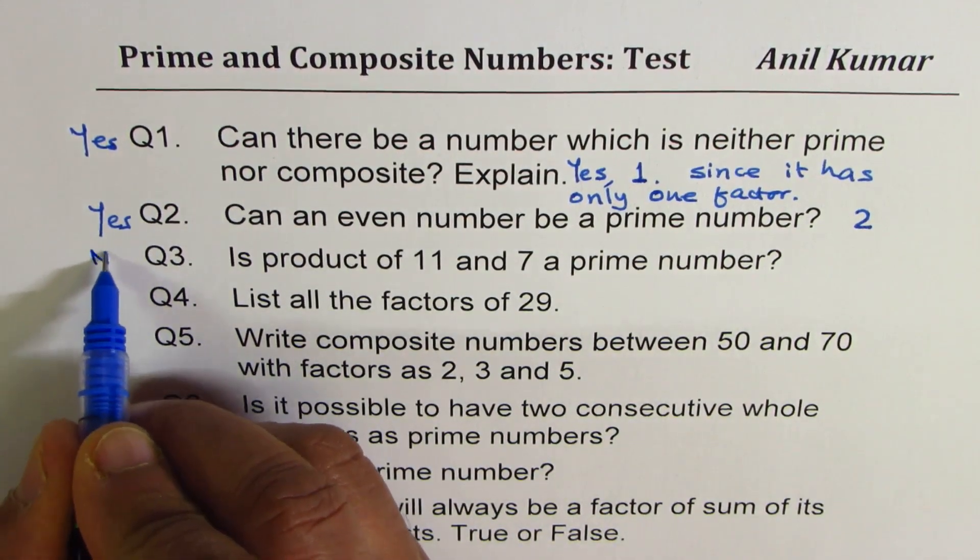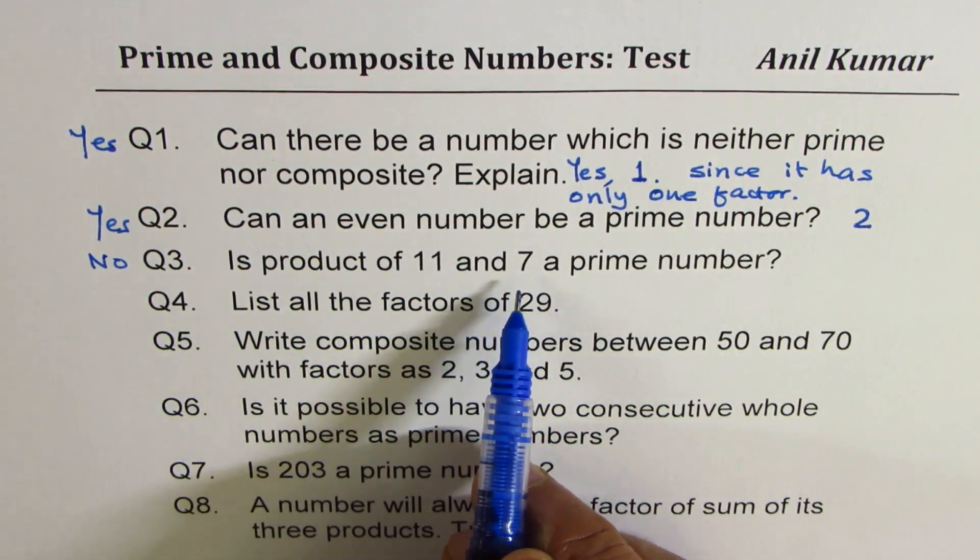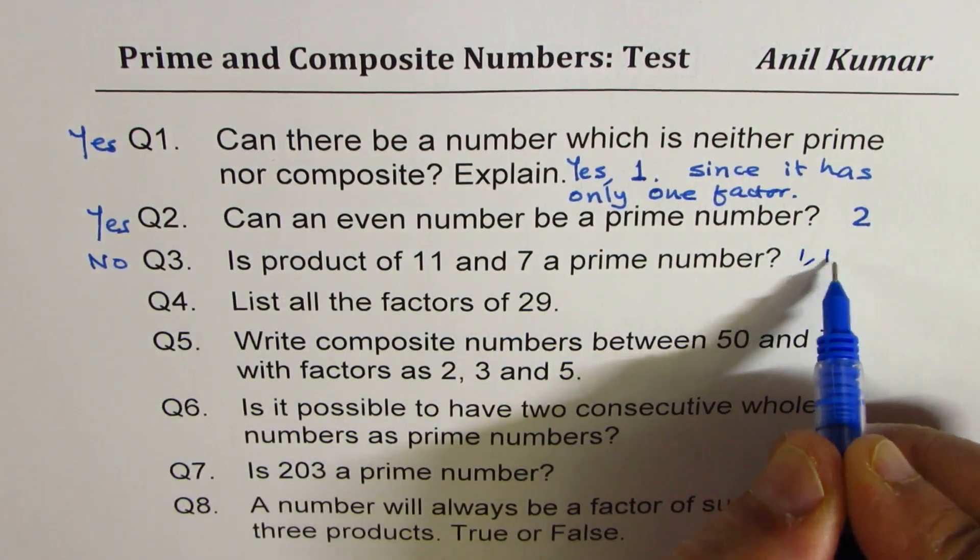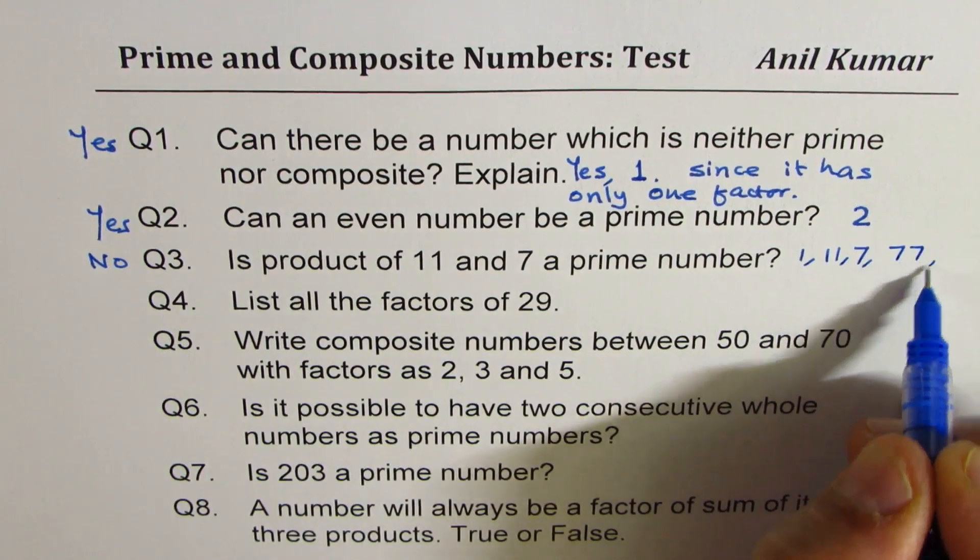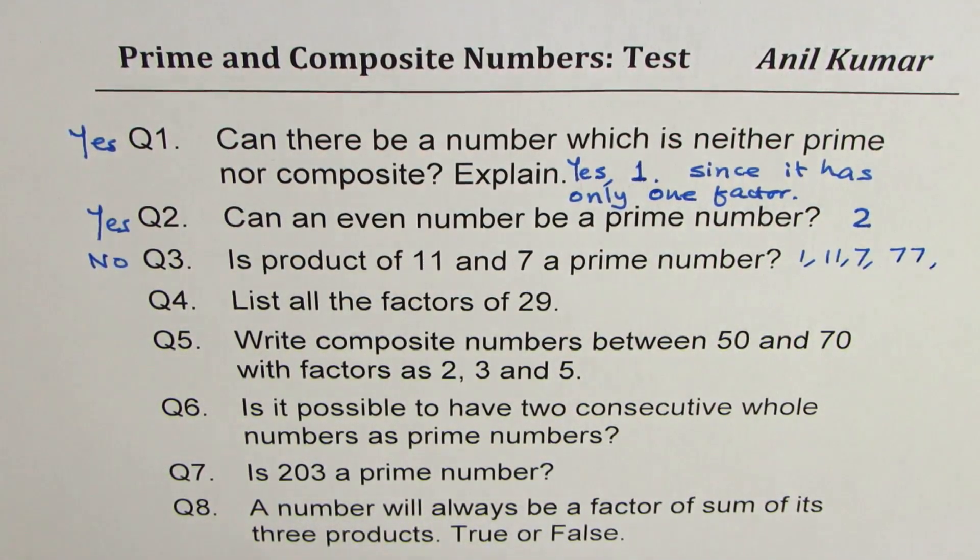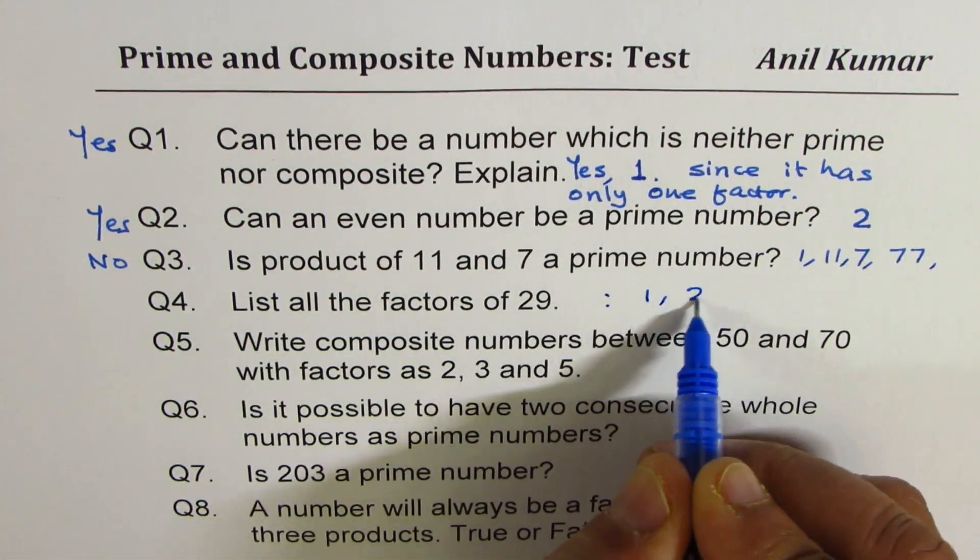Question 3: Is product of 11 and 7 a prime number? The answer is no. Now this product will have what factors? 1, 11, 7, and 77, right? So these are four factors, so it cannot be a prime number.